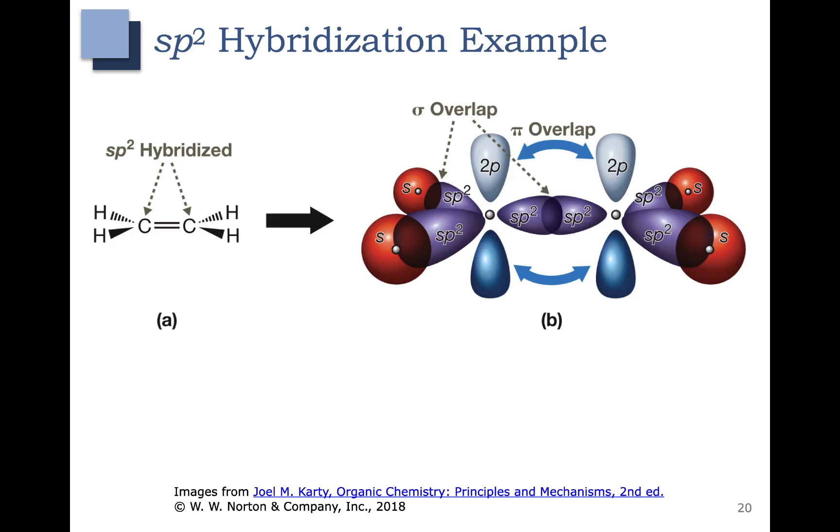Here's an example of sp2 hybridization. In this case we have a carbon-carbon double bond. This molecule is called ethene. The carbon on the left is sp2 hybridized. The carbon on the right is sp2 hybridized. That means that each of these carbons has an unused p orbital. You can see the unused p orbital here and here in blue.